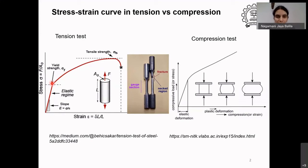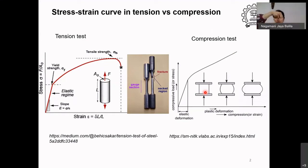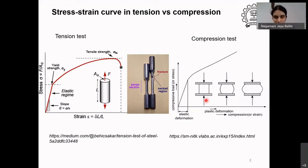The failure stress in that sense can be called the yield strength for a metallic material, and all design engineers will make sure the yield strength is not exceeded by applying a factor of safety. Precise measurement of this quantity is important. One can do a tension test, and for certain applications people also do a compression test.